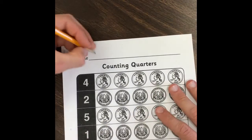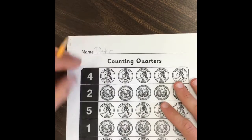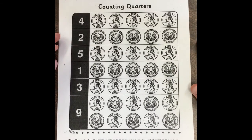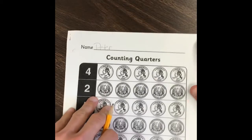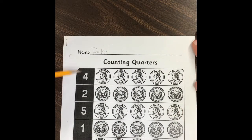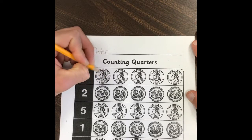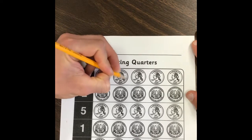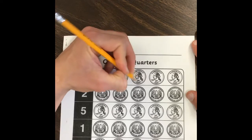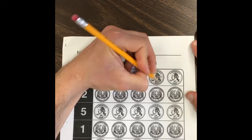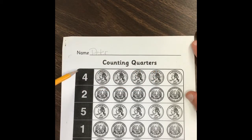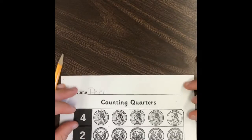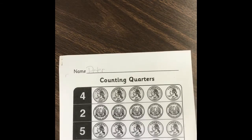Last page — counting quarters. The directions are on the bottom of this one. Look at the number before each row of quarters and color that number of quarters. There are four here, so we'll color four quarters. You can color any color you want and go into more detail if you like. We have one left over and that's okay because we're only coloring four quarters. This one you'll color two, five, one, three, and nine on the bottom. Pause the video here and you can finish the page at your own pace at home.